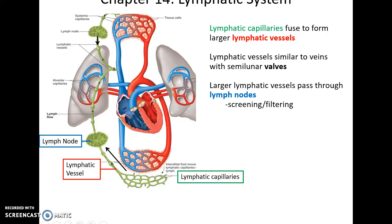Lymph from the capillaries will then migrate into the lymphatic vessels, which are fusions of the capillaries. The vessels become bigger and bigger. They have valves — semilunar valves, very similar to those inside veins — with three little cups that can prevent the lymph from back flowing.